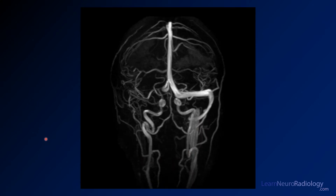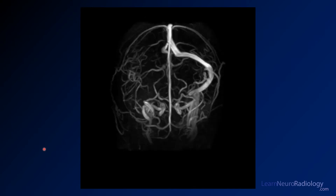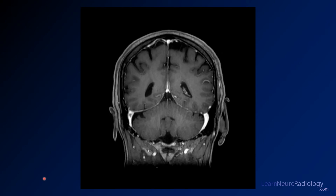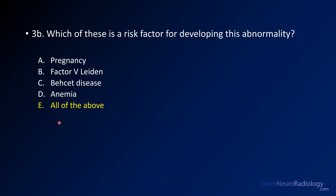Just a couple more images here. You can see the venous drainage is completely absent. On the post-contrast images, you have a delta sign — a filling defect in the right transverse-sigmoid sinuses.